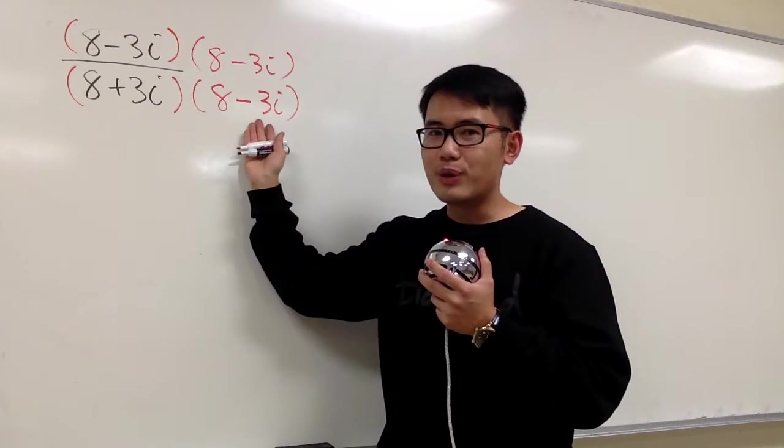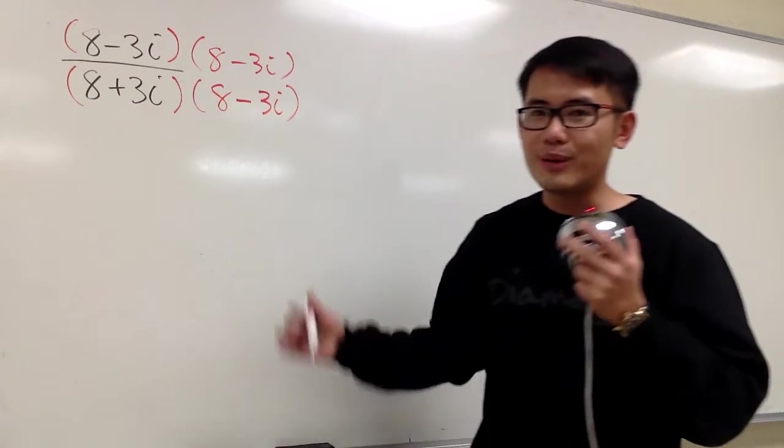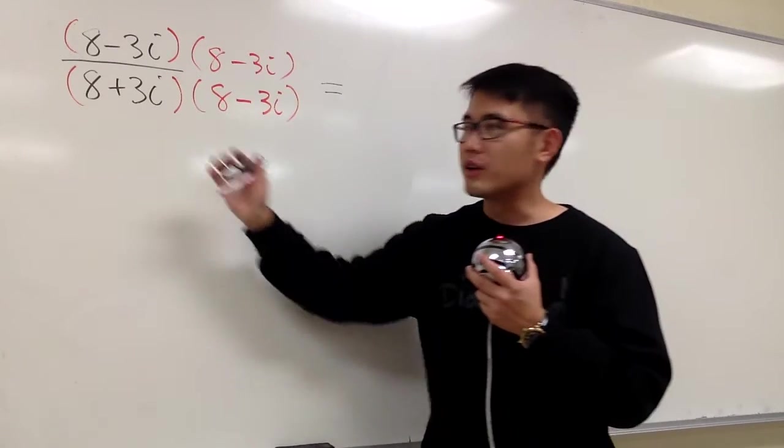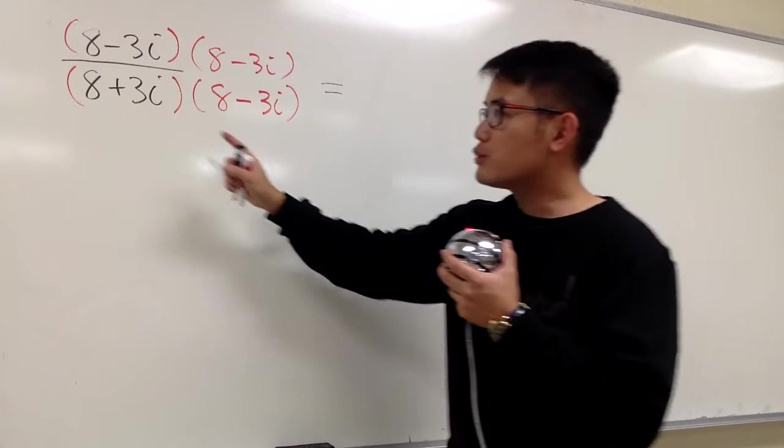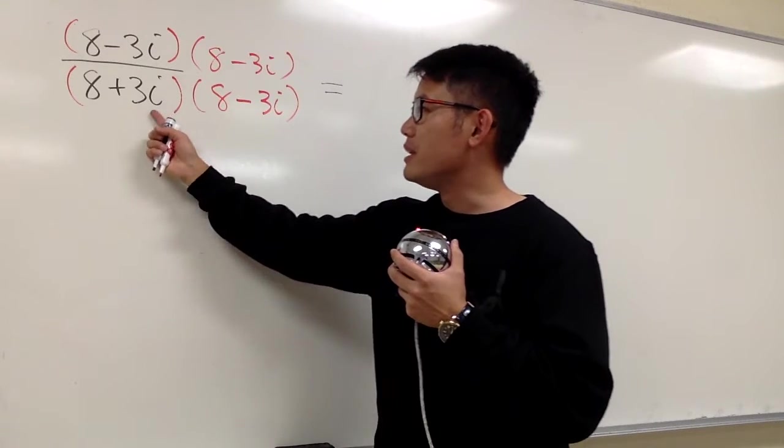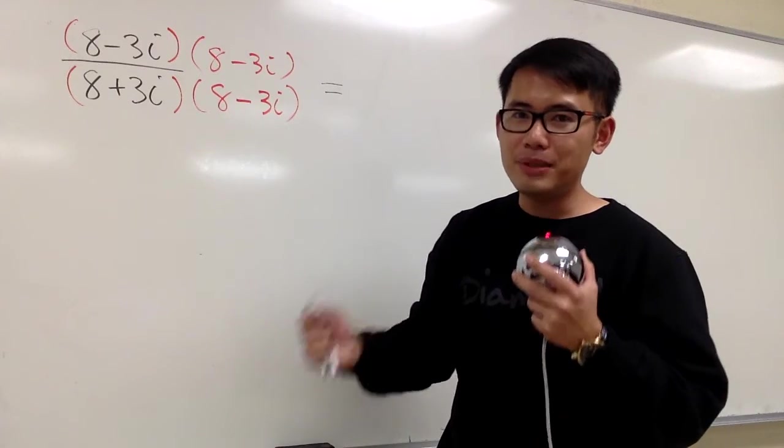And now we can just work this out. I will work out the bottom for you guys. This right here, we have a special formula for it. a plus b times a minus b, we know is a squared minus b squared.